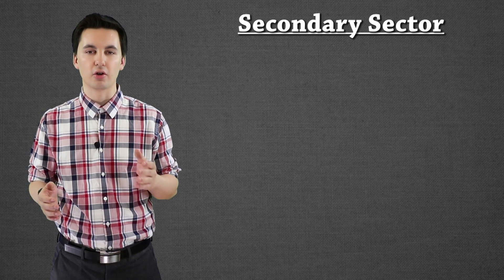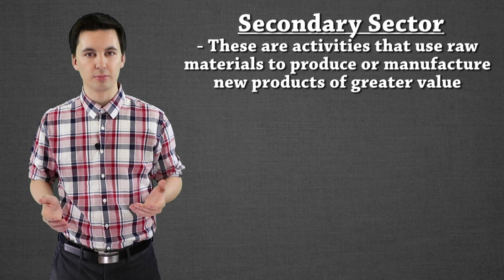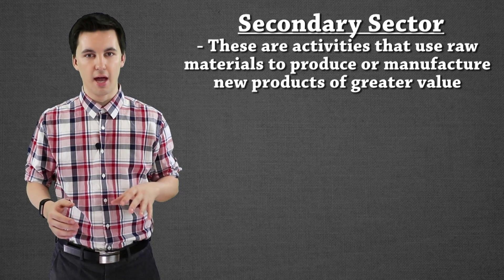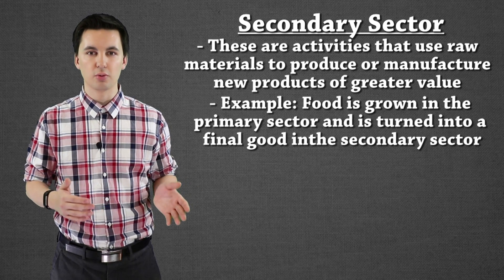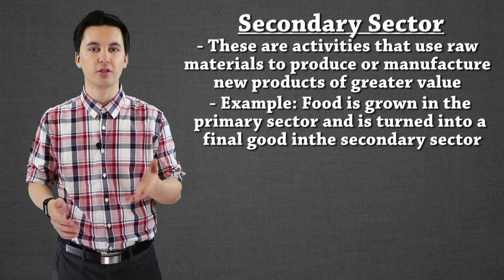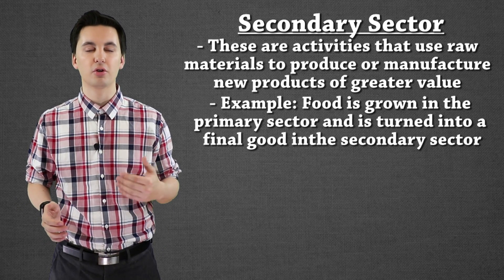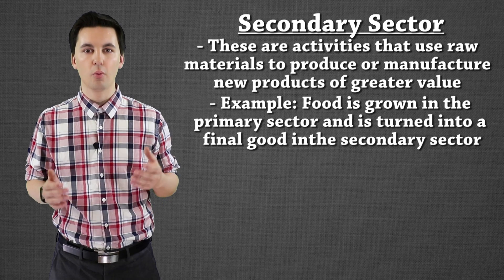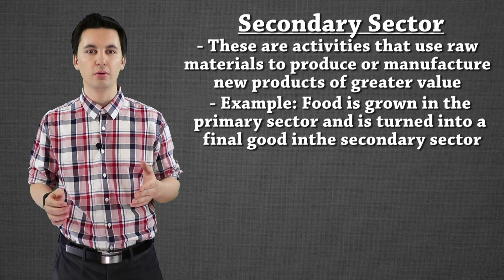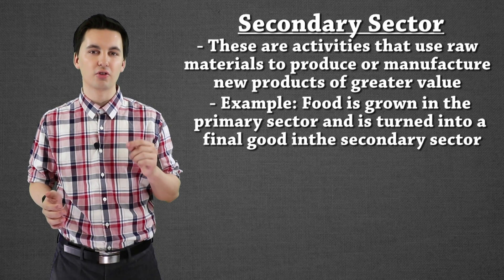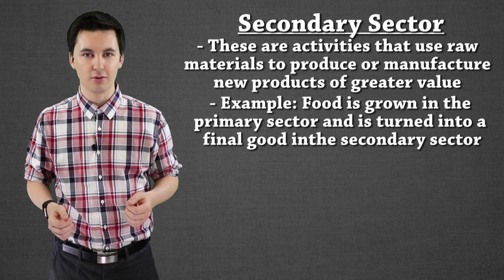The next economic sector is the secondary sector. These are activities that take the raw resources from the primary sector and turn them into something new. Here we have manufacturing and production — for example, food grown in the first sector might be turned into cereal or bottled milk. We are combining things and creating a final good that has greater value than when it came in.